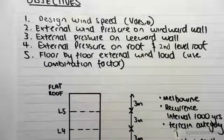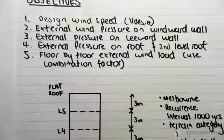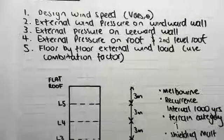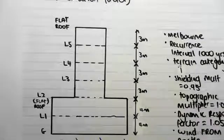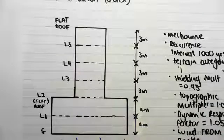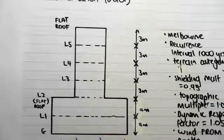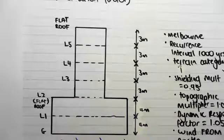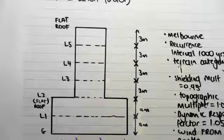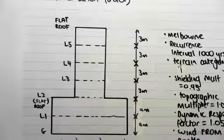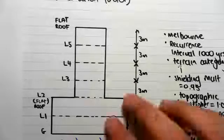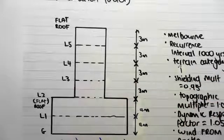Now the important thing I'm going to bring up is that the main difference between this type of problem and the previous one is that in the previous video, we only found the wind speed and the pressure at one height. So we had a structure and we found the design wind speed at the top, or the average height of that structure.